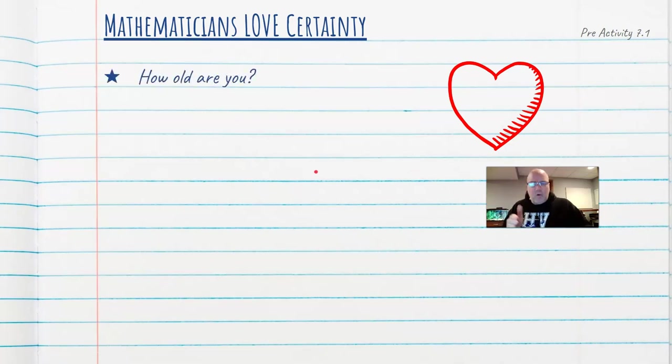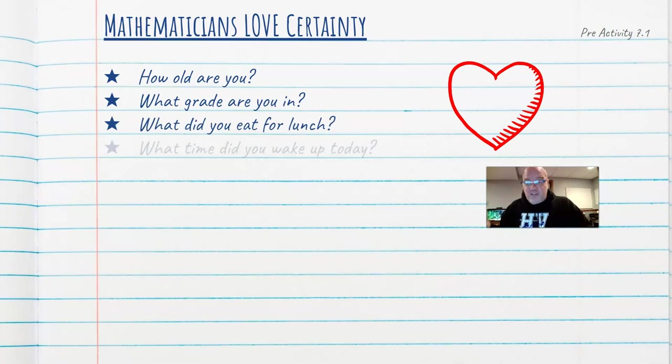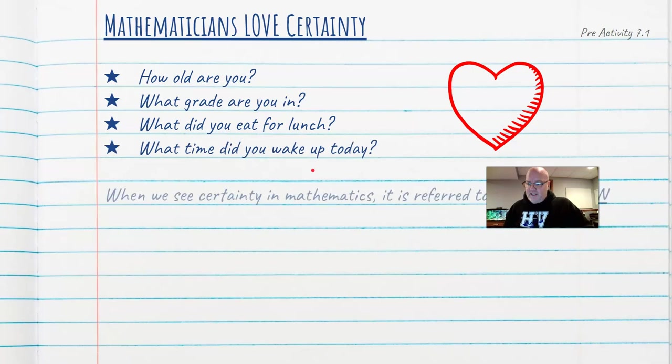So when I ask a question, how old are you? There's one answer. When I ask a question, what grade are you in? One answer, certainty. What did you eat for lunch? Certainty. What time did you wake up today? Certainty.